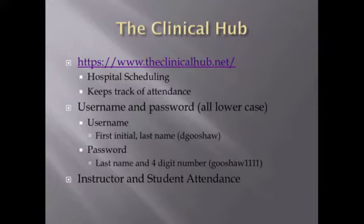Both Oklahoma City and Tulsa have moved to the website www.theclinicalhub.net. This is where the hospital does all their scheduling and keeps track of attendance. You will have a username and password to access the site. The username will be your first initial and your last name, and the password will be your last name and a four-digit number. Basically, what you will be doing is keeping track of attendance.